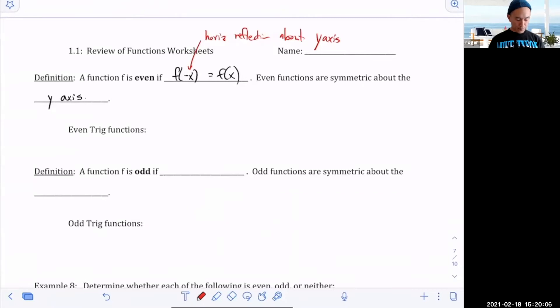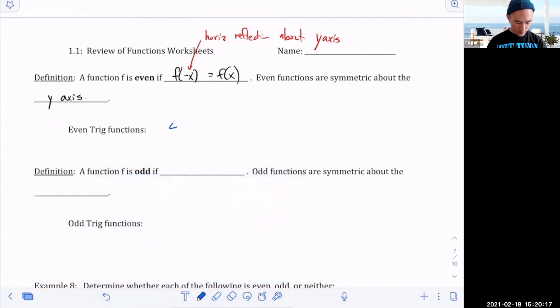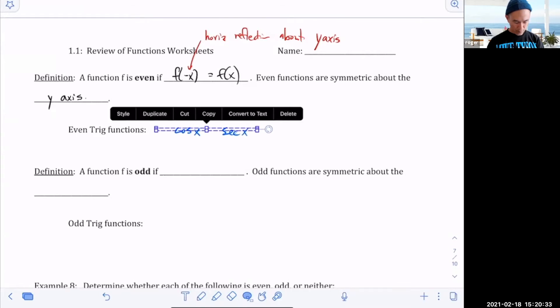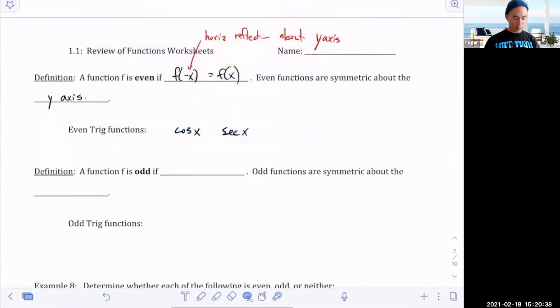So there are certain trig functions that are even, and those trig functions are cosine of x and secant of x.